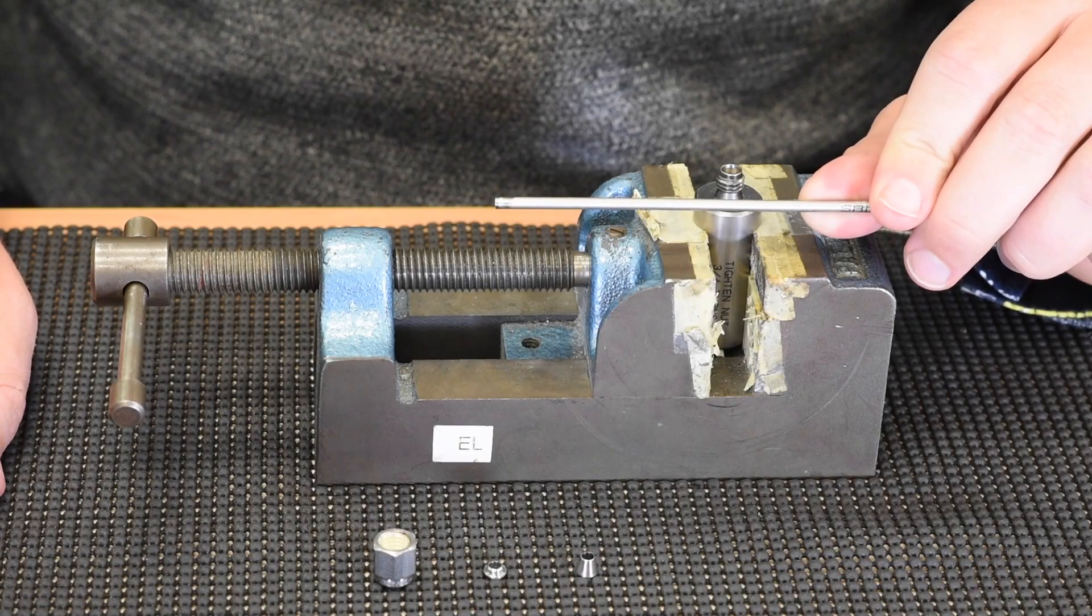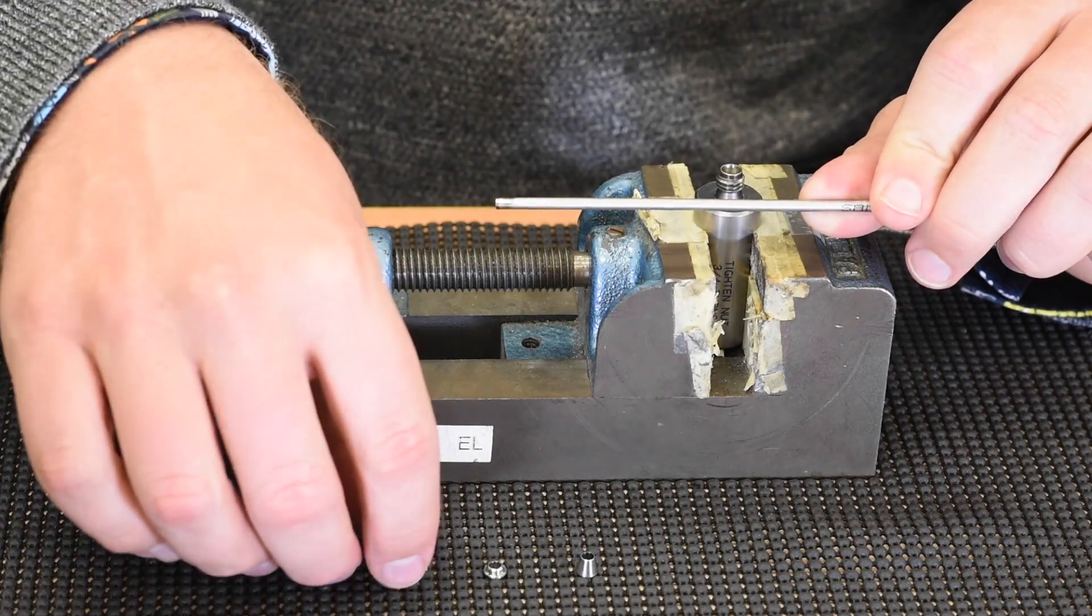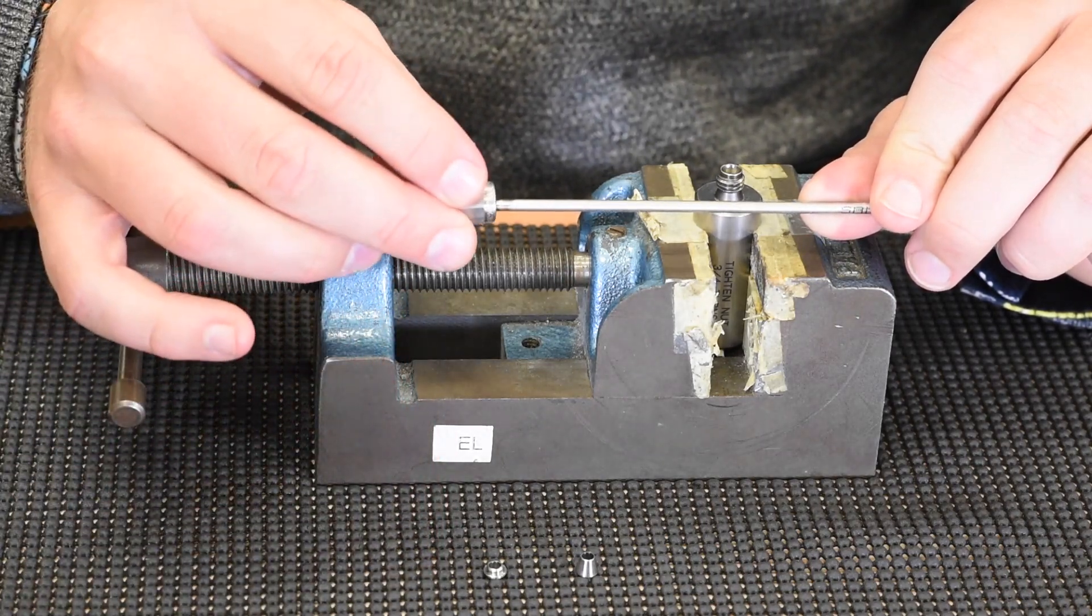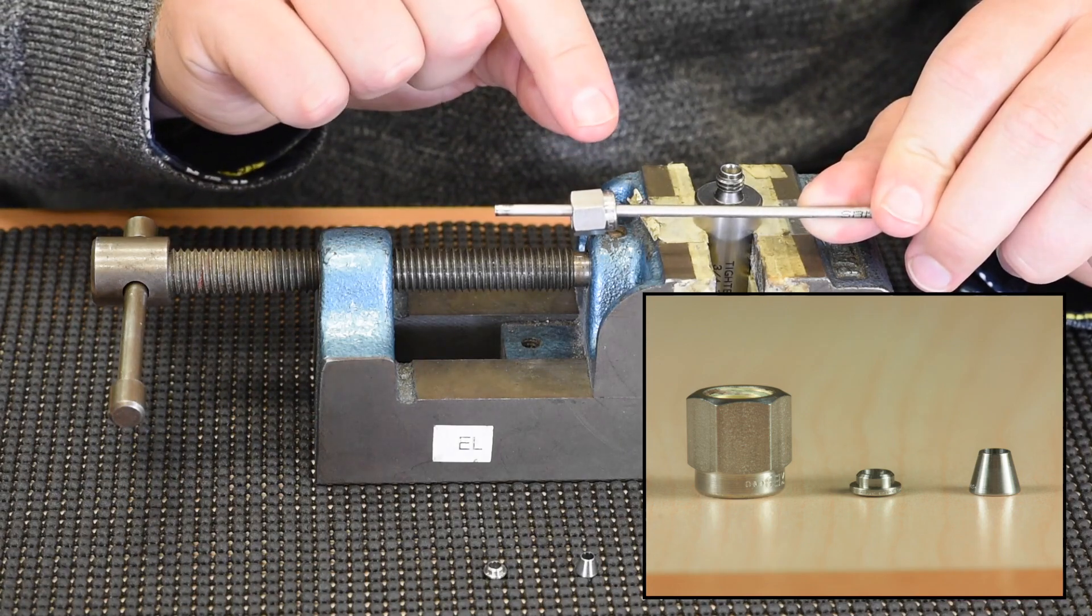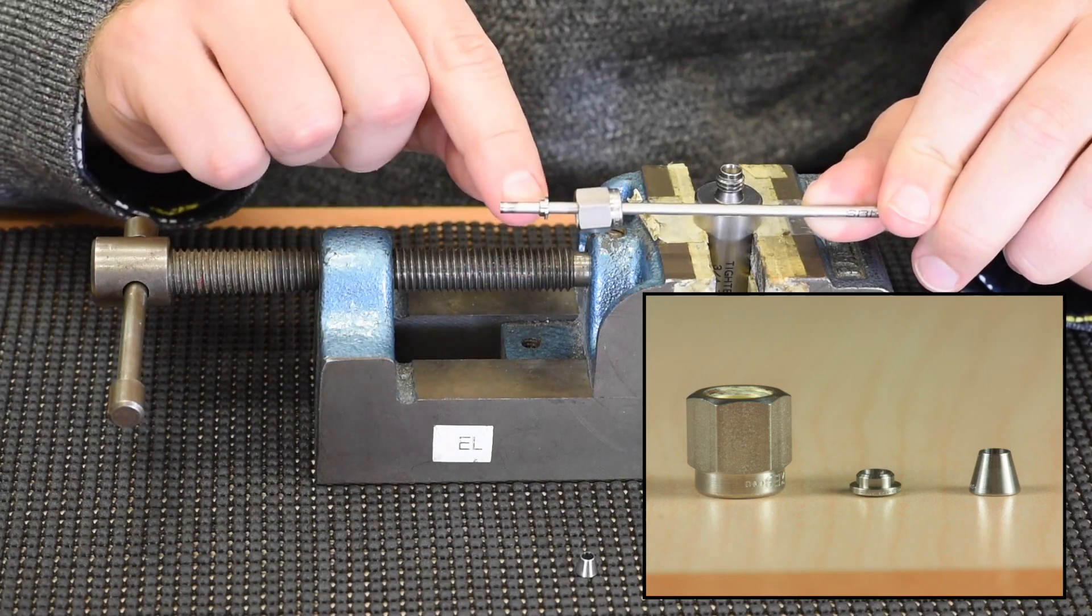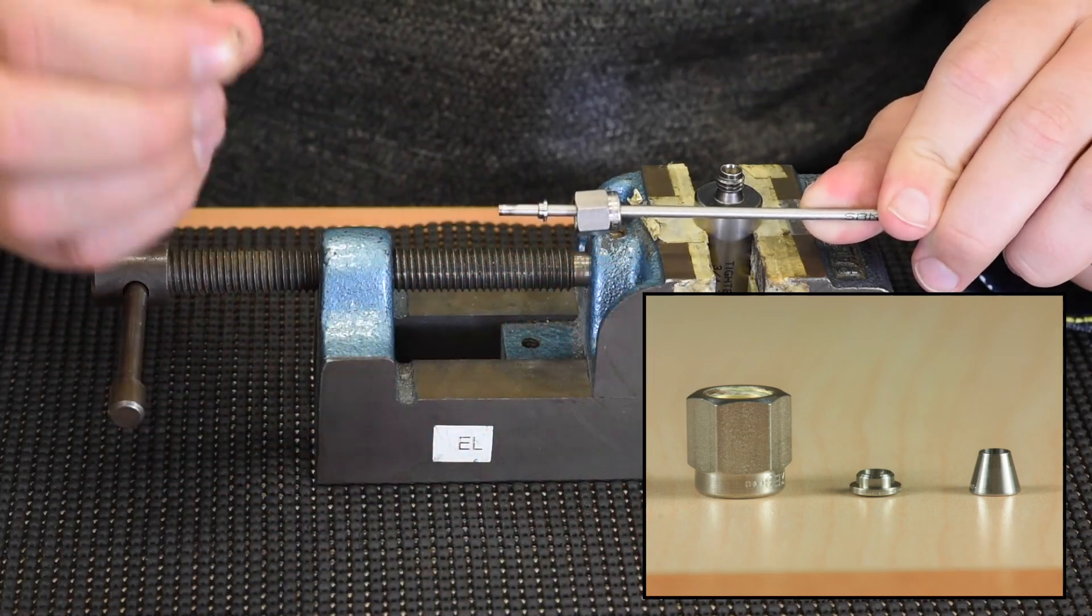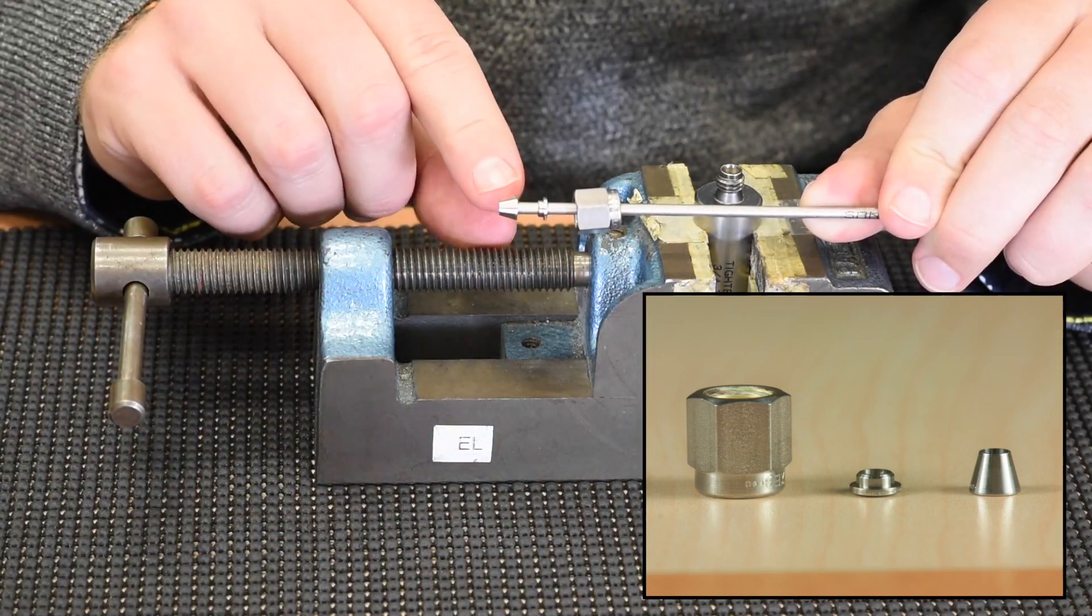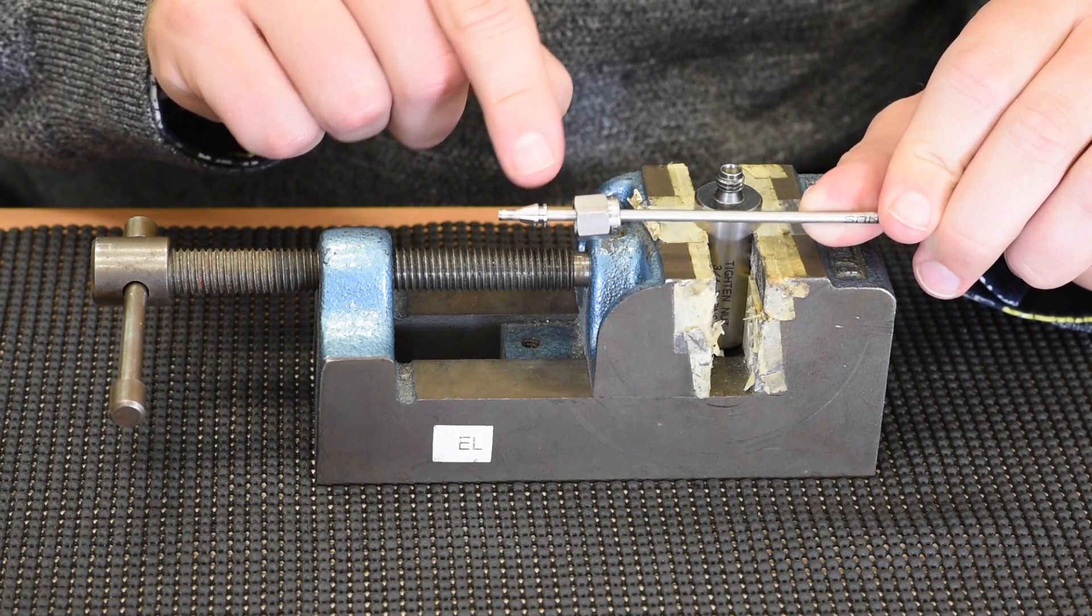So let's talk about the components of a Swagelok compression fitting. Swagelok compression fitting comes in three parts. In this case, an eighth inch compression fitting comes with a nut, a back ferrule, which has a small collar on it. That small collar needs to face towards the tip of the tubing, and then the front ferrule, this little cone. You should see that the collar sits slightly under the cone.